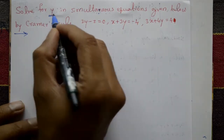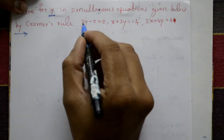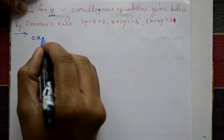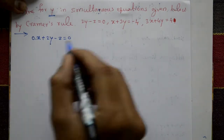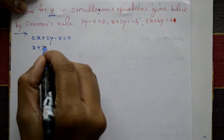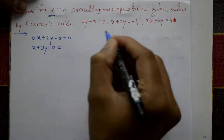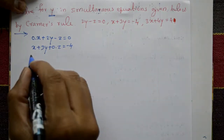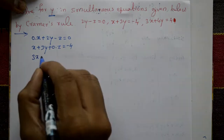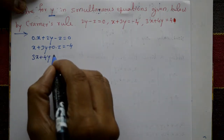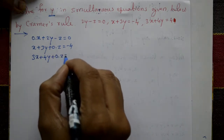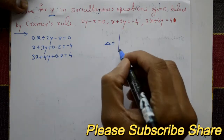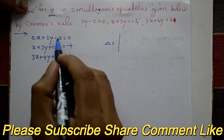Solution: rewrite each equation with all variables explicit. First equation: 0 times x plus 2y minus z equals 0. Second equation: x plus 3y plus 0 times z equals minus 4. Third equation: 3x plus 4y plus 0 times z equals 4.